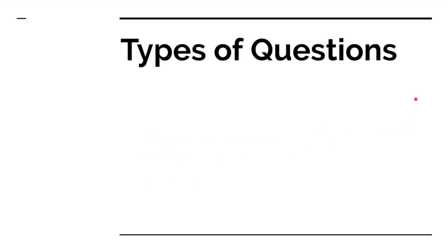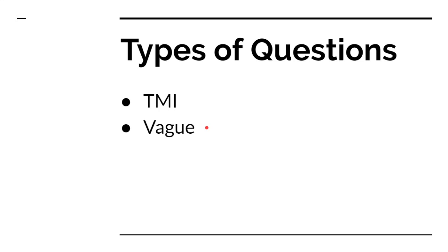The first type of question you'll come across is one that has too much information, either in the question itself or in the response options A, B, C, or D. What you have to do is look for the bottom line. Another type is the vague question — the opposite of TMI. You get too little information, so you have to either fill in the gaps or pick the best of the worst options, where sometimes all of the options look like good options.